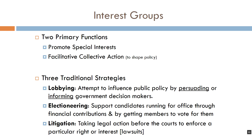We're not here today to talk about political parties — that's later this semester. For now, we're here to talk about interest groups. Let's narrow that scope and start talking about the primary functions that interest groups fulfill in our democratic process. The first of the two primary functions is that they promote special interests. A special interest is something that a specific component of the population cares about but that the general public is not necessarily all that concerned with.